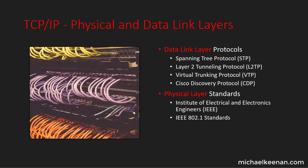Now let's talk about the protocols and standards employed by each layer. At the data link layer we have the Spanning Tree Protocol, the Layer 2 Tunneling Protocol, Virtual Trunking Protocol, and the Cisco Discovery Protocol — all standards at layer 2 of the TCP/IP and OSI models. For the physical layer, standards are mostly developed by the Institute of Electrical and Electronics Engineers, and are defined in the 802 working group.